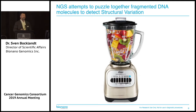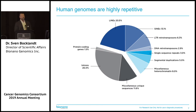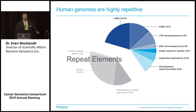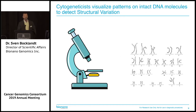There's another problem with NGS, and that is that the genome is highly repetitive. Just about a third of a human genome consists of unique sequences, and two-thirds consists of repeats. Every unit of these repeat classes is already longer than the read length of NGS. So putting complex arrays of these repeats together with 100 base pairs is just not possible, and that's why cytogenetics are still the gold standard to look at structural variation in genomes.